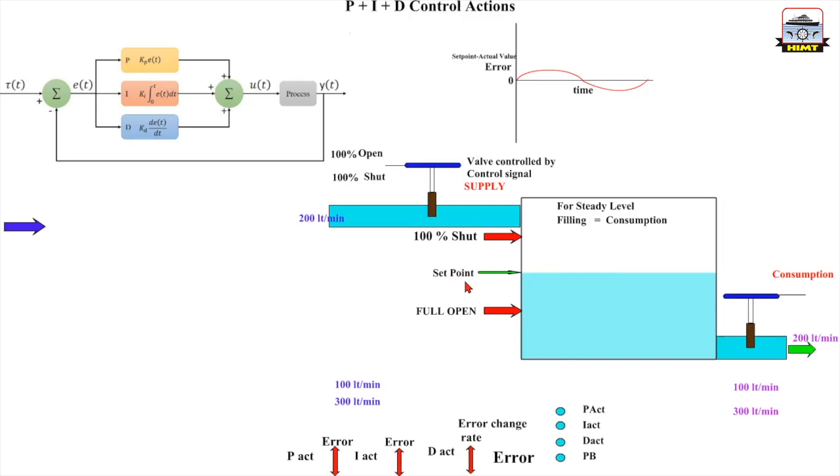We call it a deviation or offset or error. We also sometimes use the jargon desired value of the control variable. These are all just jargon, but let us keep it simple.